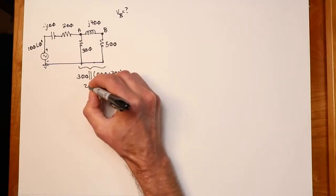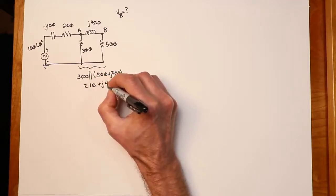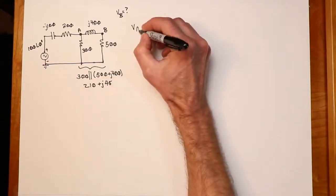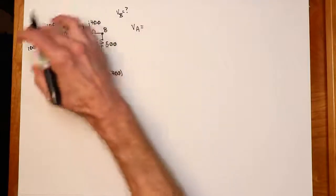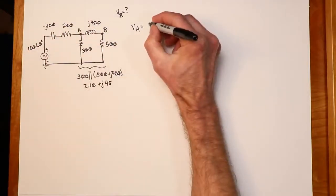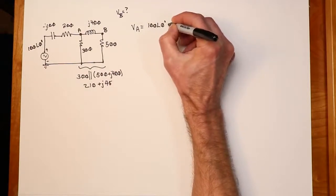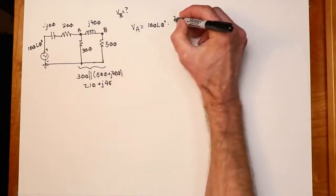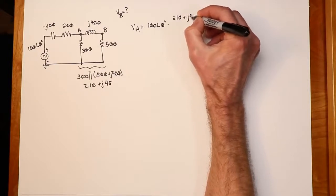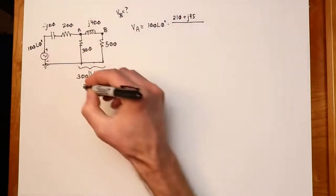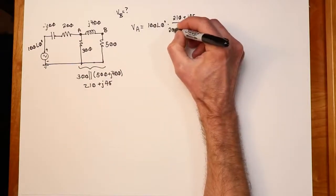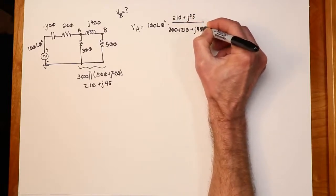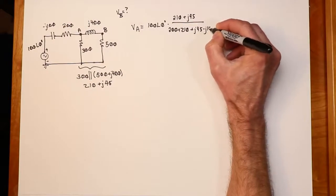Well, I've got 300 in parallel with a series combination of 500 plus j400. What does that work out to? Well, that works out to 210 + j45. Alright, so to get VA, we could take our source, 100 at zero, multiply that by the thing that we're interested in, which is the 210 + j45.